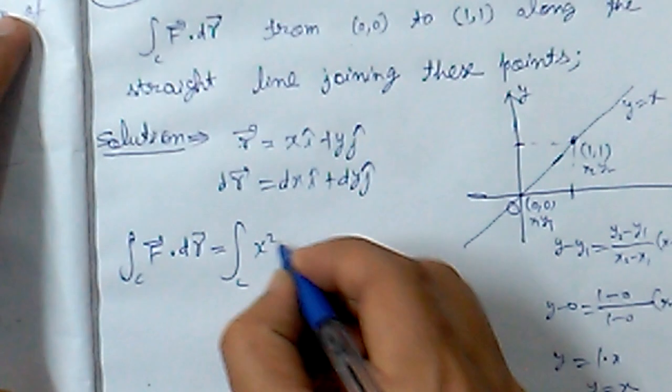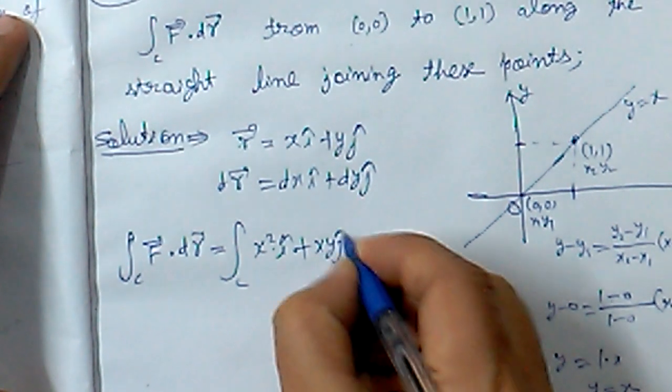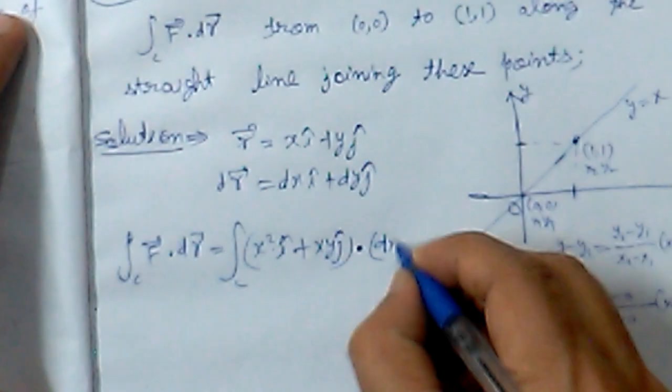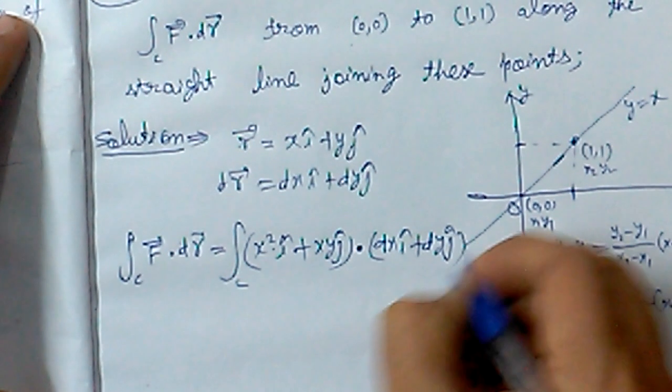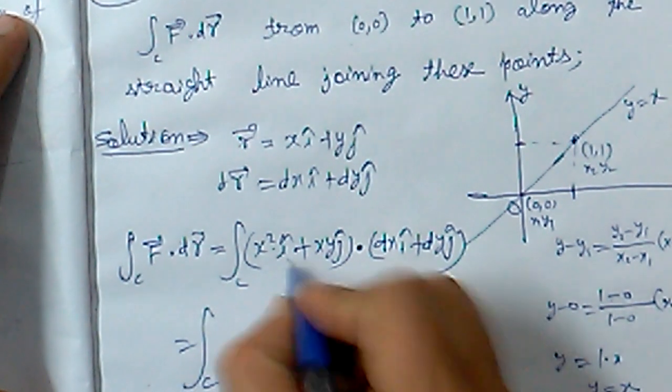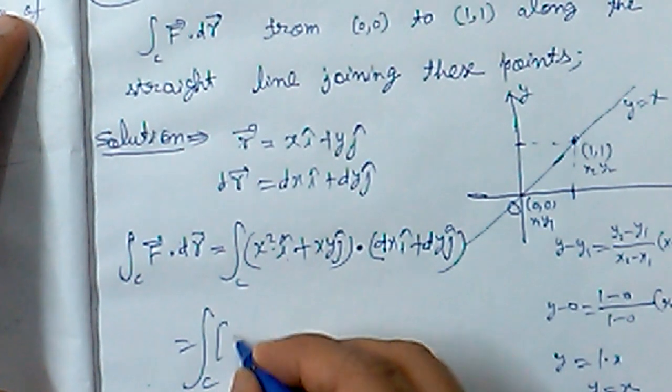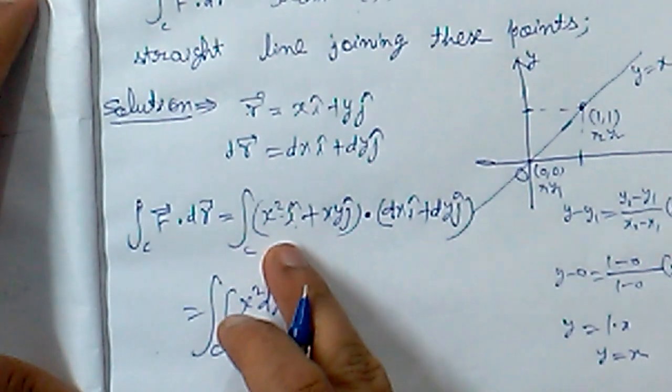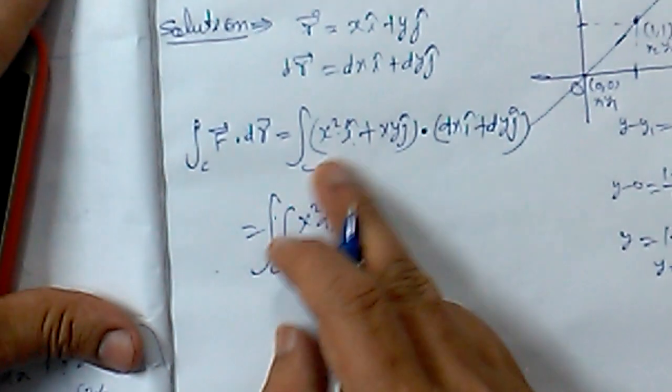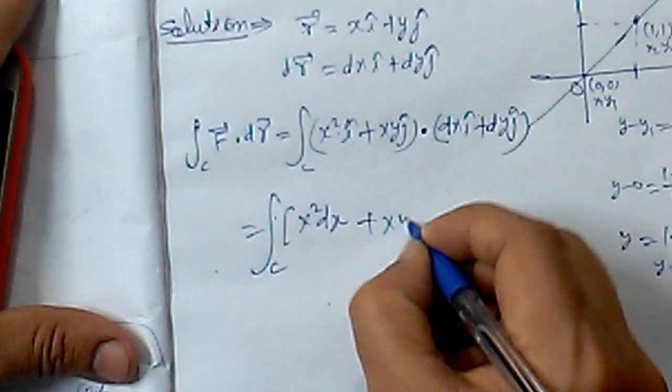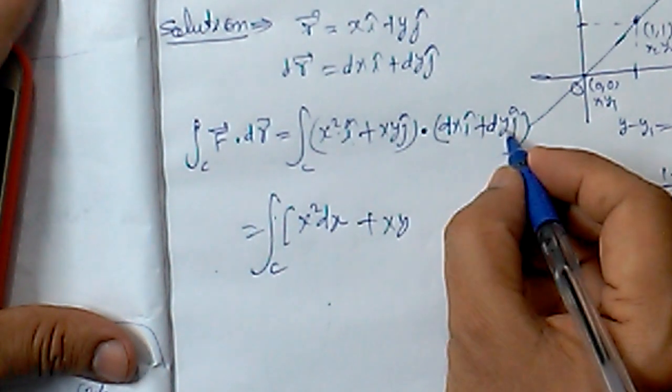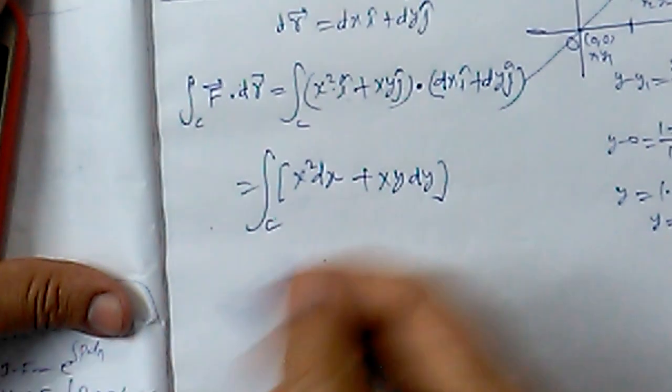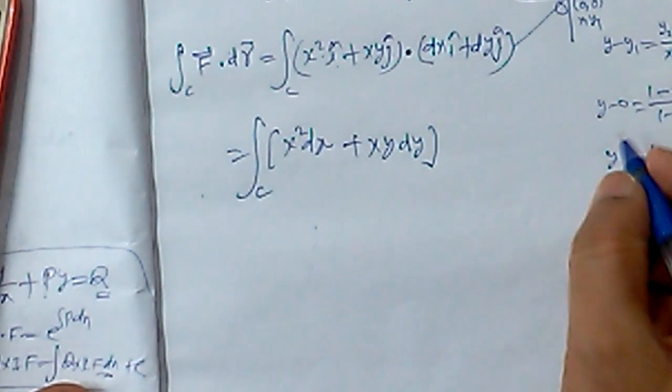The line integration of F dot dr: F is given as x square i cap plus xy j cap, and we take the dot product with dr which is dx i plus dy j. In dot product, we multiply i coefficient with i coefficient to get a scalar product. So x square dx plus xy dy.